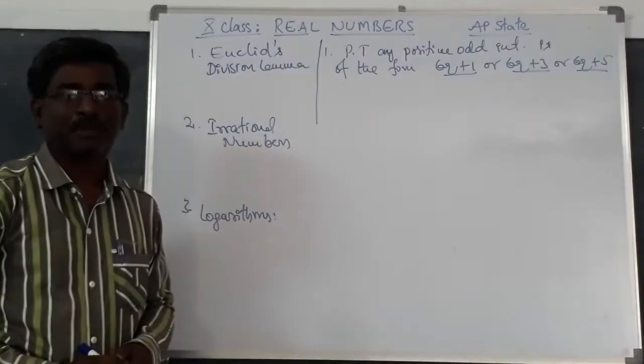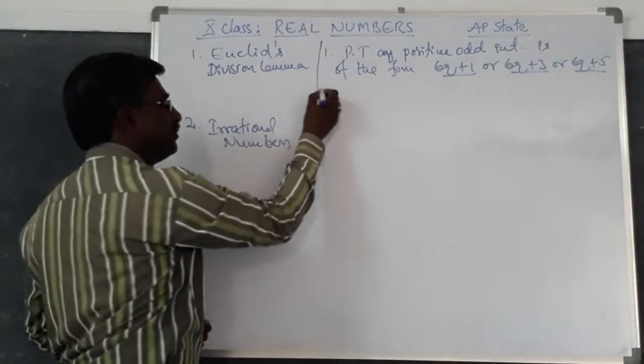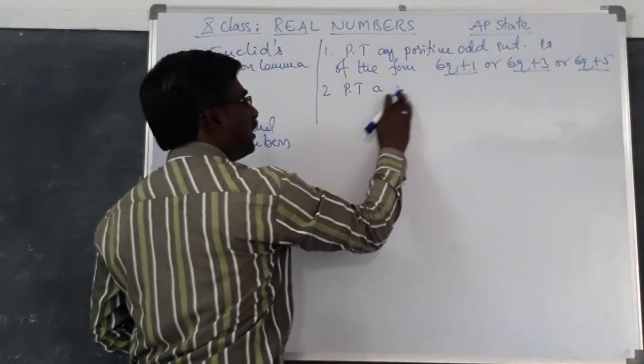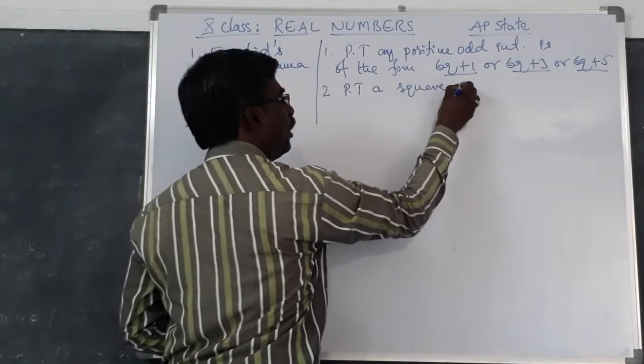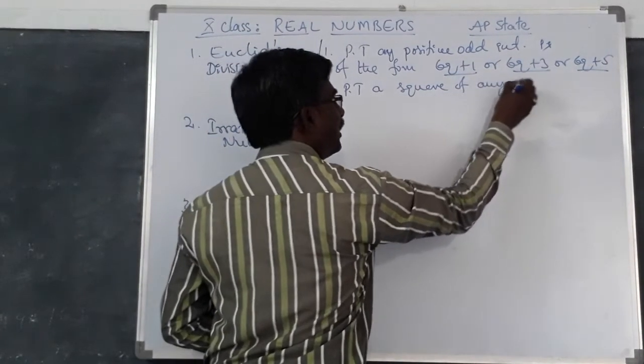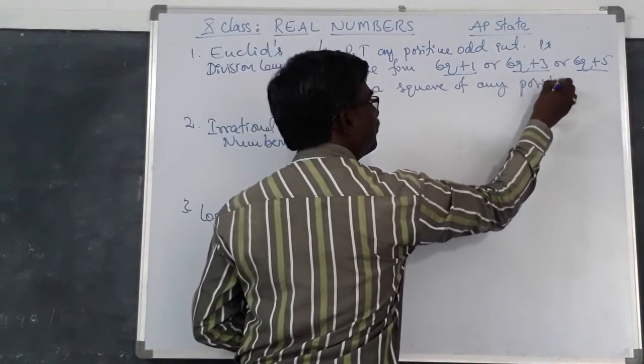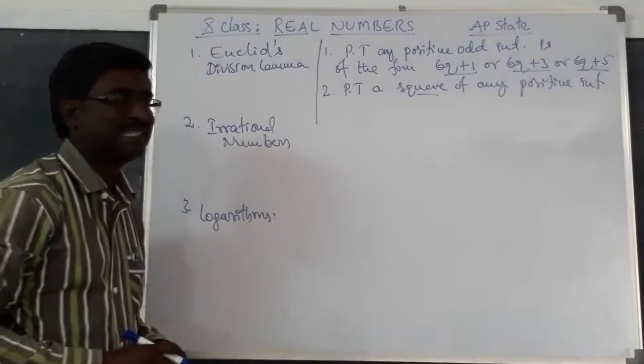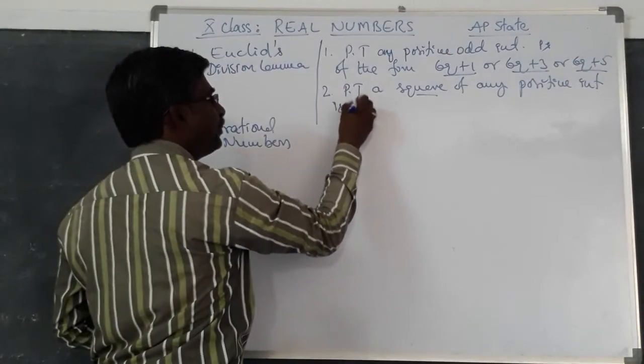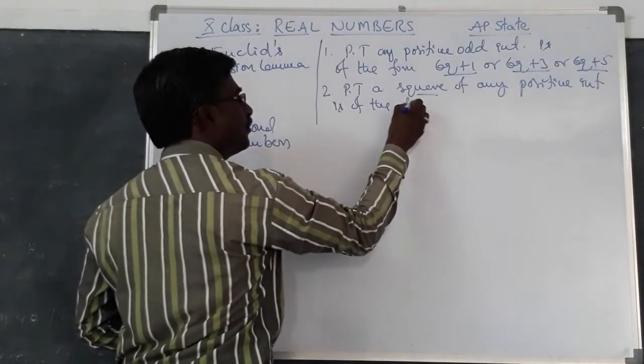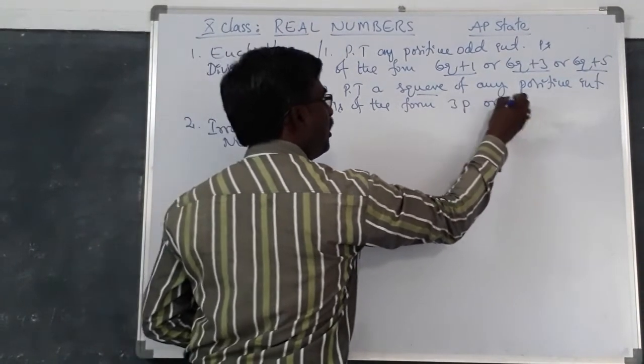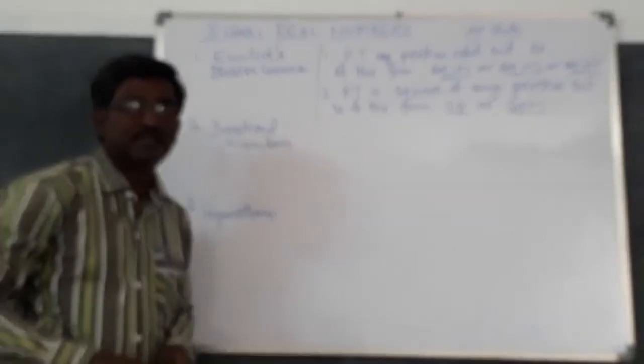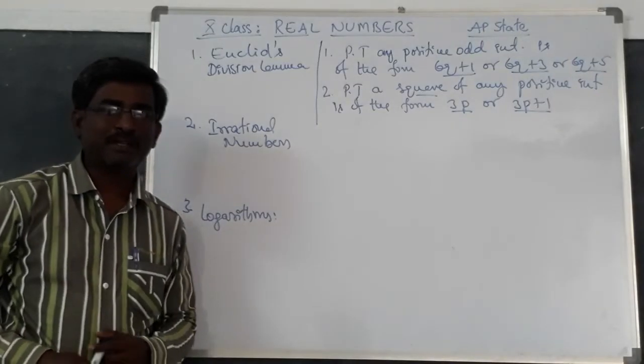This is one of the important problems. And another one: prove that a square of any positive integer is of the form 3p or 3p plus 1. This is one of the important concepts under Euclid's lemma.